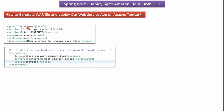Then in pom.xml file, the packaging we have to specify as WAR. By default packaging is JAR, so we have to change it to WAR. We also have to include the Spring Boot starter Tomcat dependency and the scope should be provided. This is to instruct Spring Boot not to use the inbuilt Tomcat server.